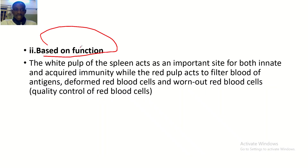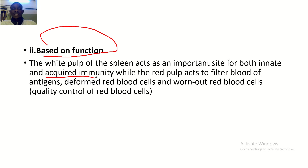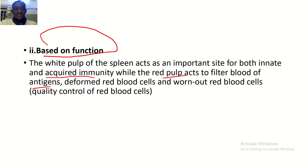Based on function, the white pulp of the spleen acts as an important site for both innate and acquired immunity, as it contains T lymphocytes and B lymphocytes. While the red pulp acts to filter blood of antigens, deformed red blood cells, and worn-out red blood cells.